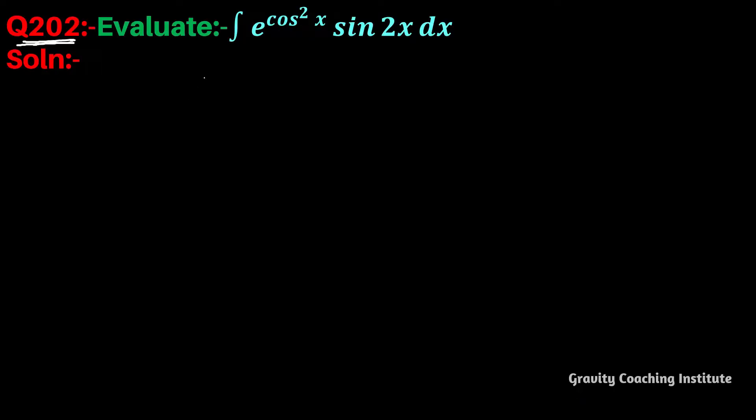Question number 202: Evaluate ∫e^(cos²x) sin 2x dx. So first of all, let I = ∫e^(cos²x) sin 2x dx.